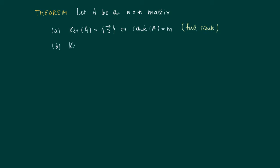Secondly, if the kernel of A consists only of the zero vector, then we know that we have at least as many rows as we have columns.